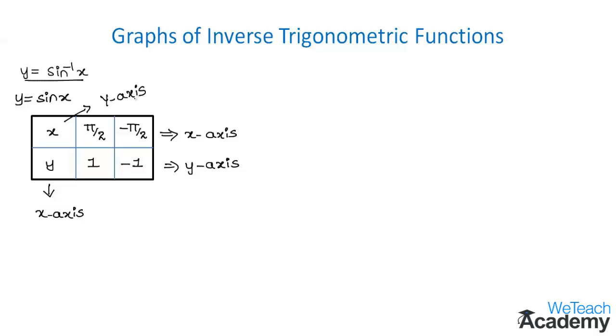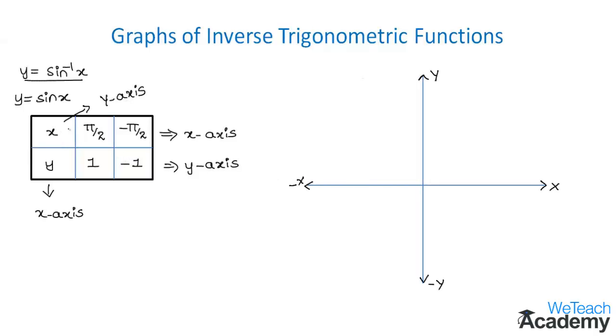Now let me explain this concept using a graph. Let us consider a coordinate plane over here. Now let us write the values on the y-axis, which are pi by 2 and minus pi by 2. So here we get pi by 2, and then here we get a point called minus pi by 2.